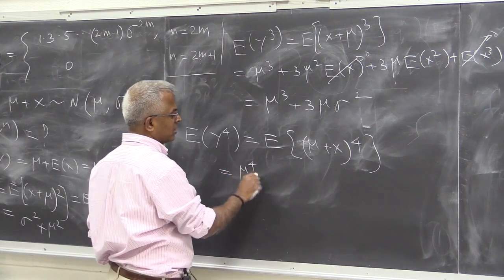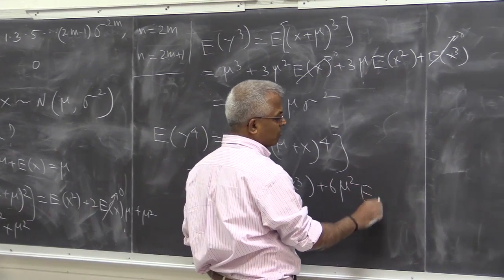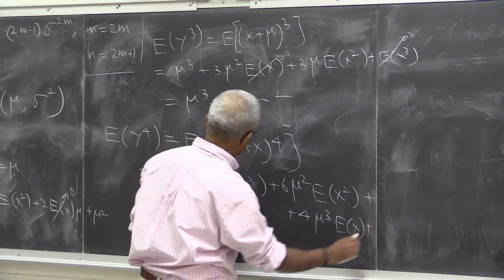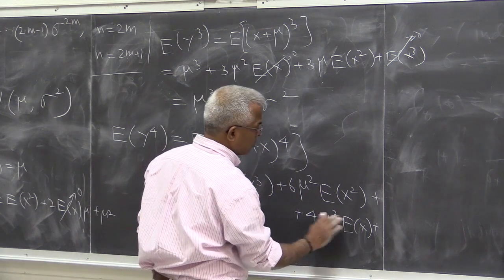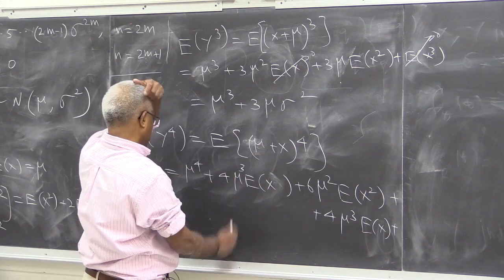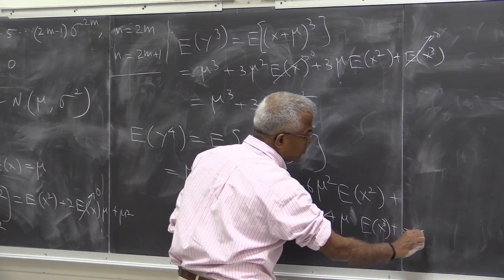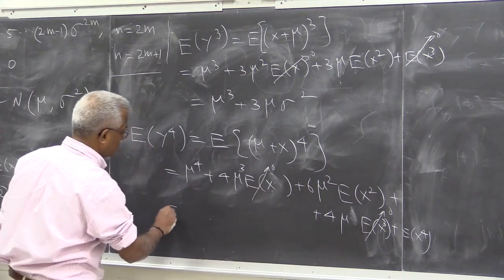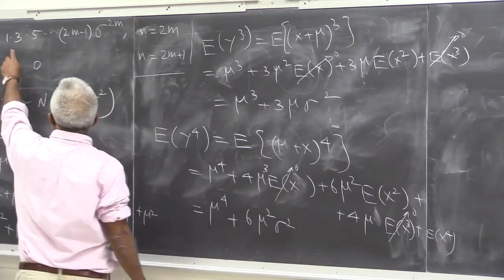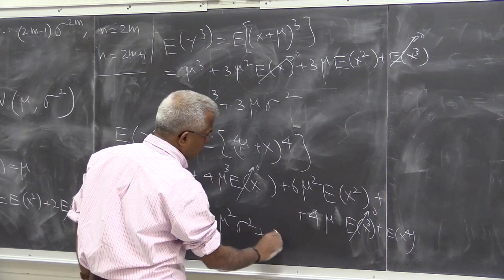E[y^4] = E[(mu + x)^4]. Expanding using the binomial theorem: mu^4 + 4 mu E[x^3] + 6 mu^2 E[x^2] + 4 mu^3 E[x] + E[x^4]. Since E[x] = 0 and E[x^3] = 0, this simplifies to mu^4 + 6 mu^2 sigma^2 + E[x^4]. From our formula, E[x^4] = 1 times 3 times sigma^4 = 3 sigma^4. So E[y^4] = mu^4 + 6 mu^2 sigma^2 + 3 sigma^4.